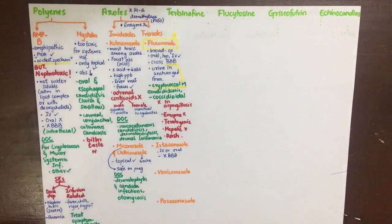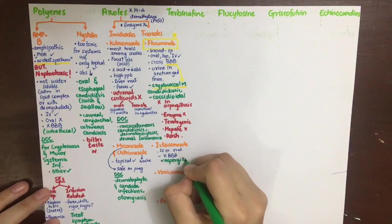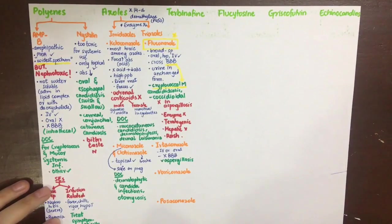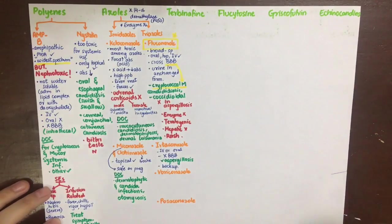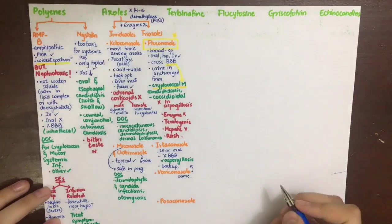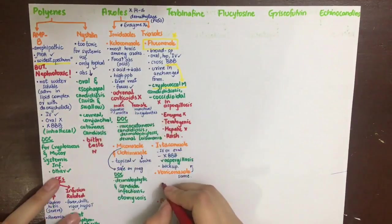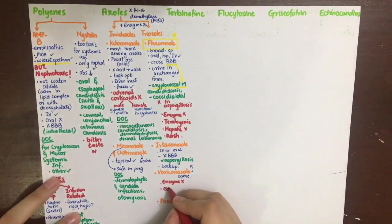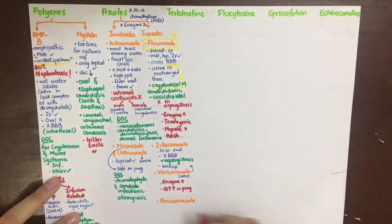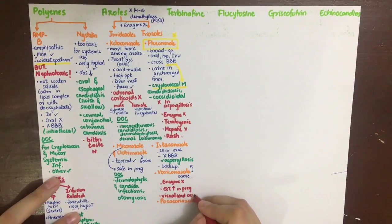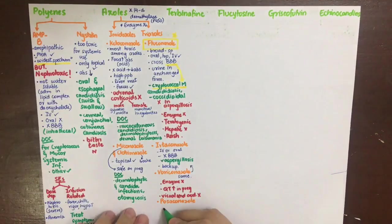Itraconazole can be given IV or orally just as fluconazole, but it will not cross the blood-brain barrier in contrast to fluconazole. But it can be used in aspergillosis. It is a backup drug for candidiasis. Voriconazole is the same as itraconazole. Its enzyme-inhibiting property is a problem, and it can cause QT prolongation and visual and auditory disturbances. Lastly, posaconazole is also used in aspergillosis and mucormycosis, and food increases its absorption.